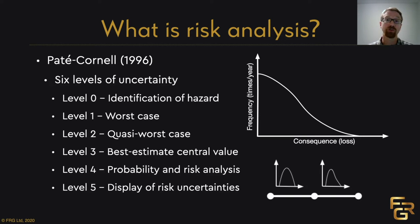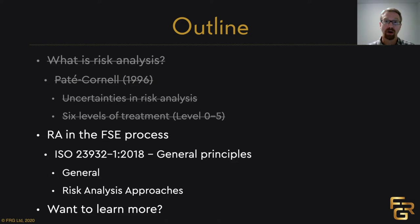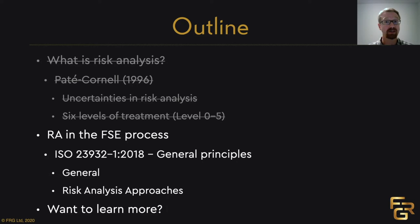So those are the six levels of treatment of uncertainty presented by Pate-Cornell. It's important to note that Pate-Cornell didn't look at fire safety engineering specifically — she looked generally at different types of risk analyses done in the U.S. context in 1996. Now I'm going to tell you more about the work done in ISO, and more specifically about ISO 23932 part one from 2018, called General Principles, which outlines how we do fire safety engineering design and management.